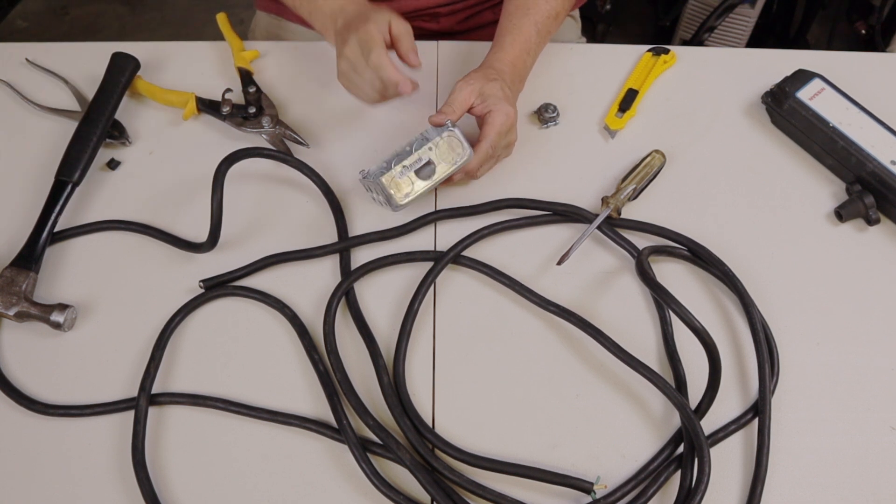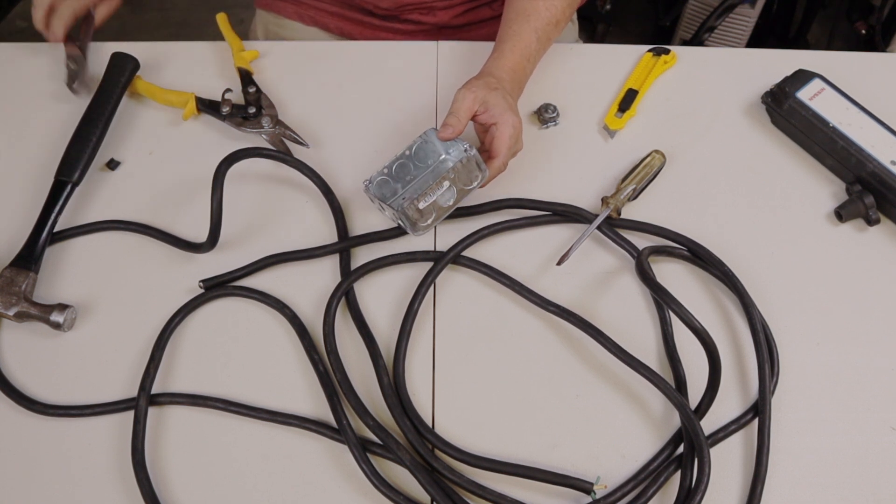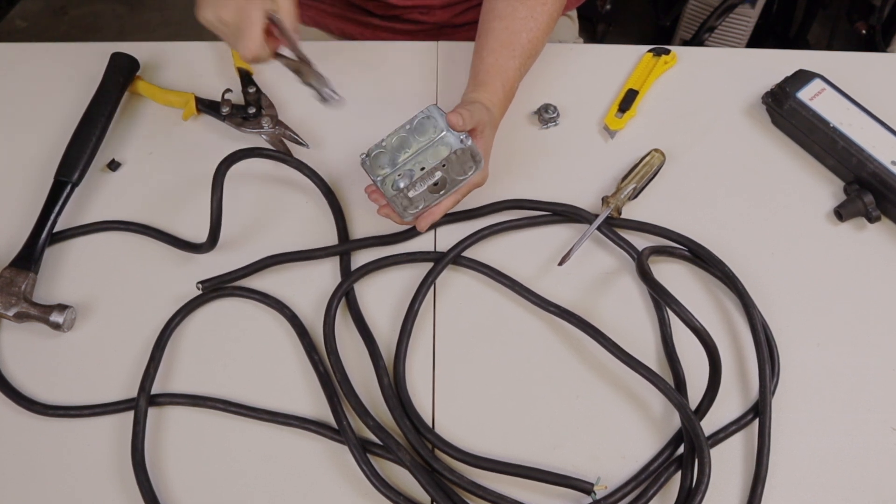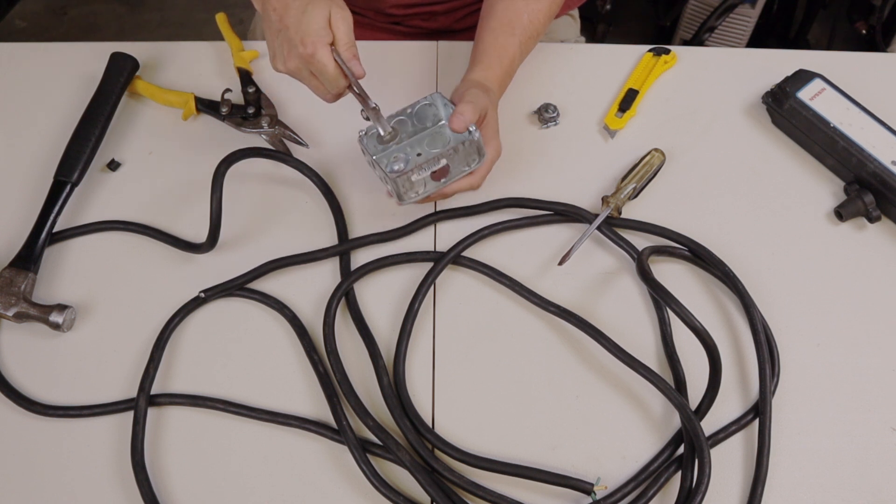Hit that. Bust it loose like this here and then just take a pair of pliers. Bend it back and forth a couple of times. And it'll pull that knockout right out of there.